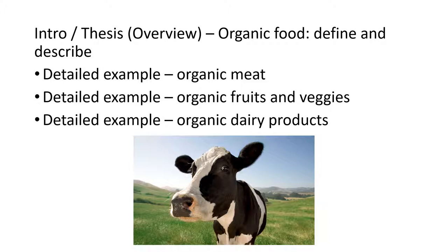In this case, the thesis is simply that organic food is an important trend, and we want to define and describe how this trend has emerged. But now I want to go into more details about specific kinds of organic food. So I have a couple of pages about organic meat, a couple of pages about organic fruits and vegetables, and a couple of pages about organic dairy products.